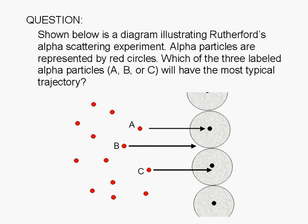Shown below is a diagram illustrating Rutherford's alpha scattering experiment. Alpha particles are represented by red circles.